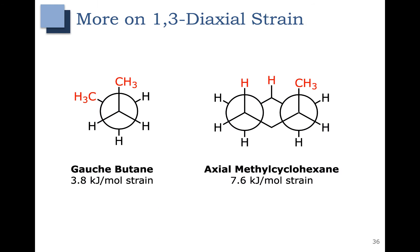This slide provides a little bit more information on 1,3-diaxial strain. Let's compare to gauche-butane over here, which has this gauche interaction, and that's associated with 3.8 kJ per mole of strain. Now let's take a look at methylcyclohexane, and we have that methyl group in the axial position. The 1,3-diaxial strain, where the methyl group interacts with both of these hydrogens here, is essentially just two gauche interactions — one with this carbon here and one with this carbon here. And you can see that based on the actual measured strain, 7.6 kJ per mole of strain is 2 × 3.8. So this is literally just two gauche interactions.